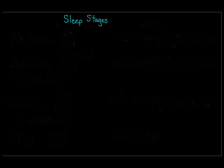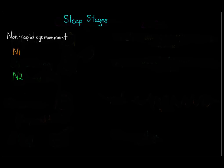These four stages occur in approximately 90-minute cycles during a normal night of sleep. The first three stages are all considered non-rapid eye movement, or non-REM, which I'm going to abbreviate as N1, N2, and N3. N1 is the stage between sleep and wakefulness.